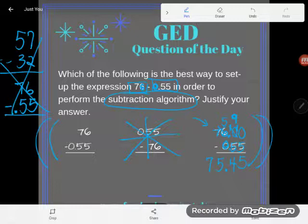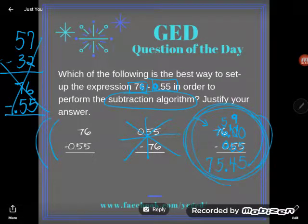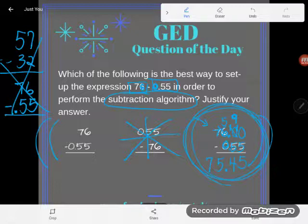But once again, the best way to set up the expression would be this one. Why? Because my place values were lined up. If you have any questions about this or any other GED math topic, be sure to drop it in the comments and I'll do my best to answer it.